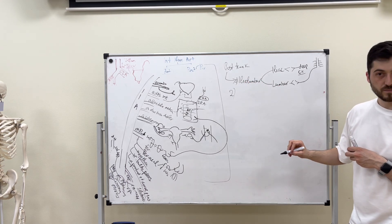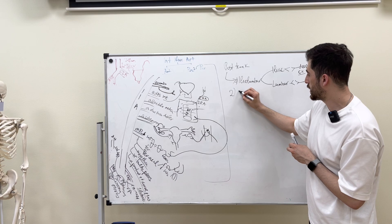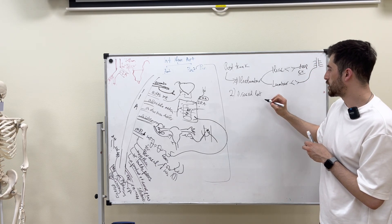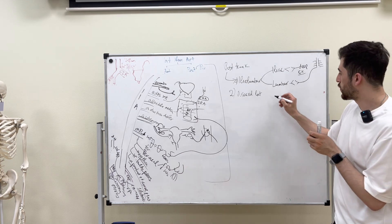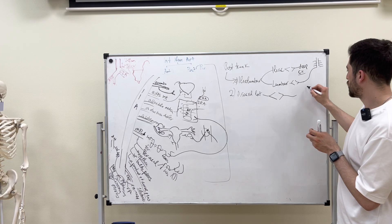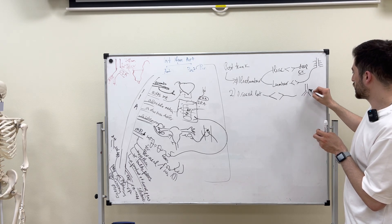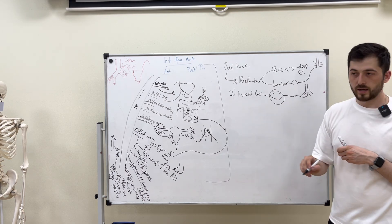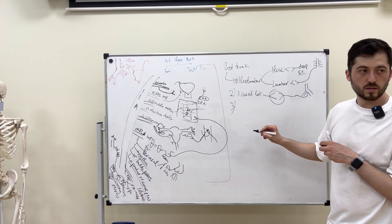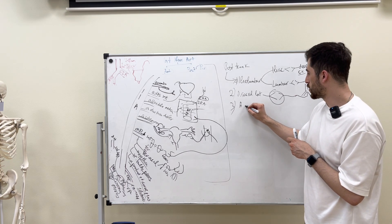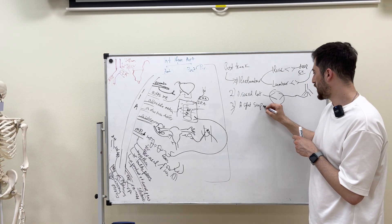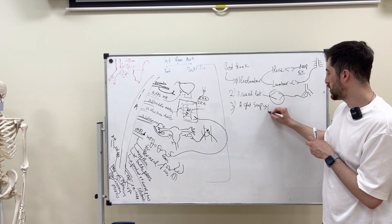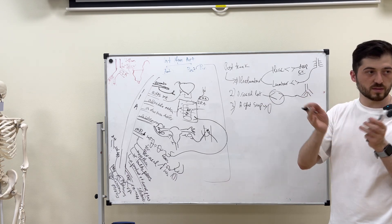The second branch of the posterior trunk is arteria sacralis lateralis, which goes laterally to the sacrum. It forms anastomosis with the arteria sacralis mediana, which arises directly from the aorta at its bifurcation. The third branch is arteria glutea superior, which passes through the suprapiriform foramen and supplies all the muscles in that region.